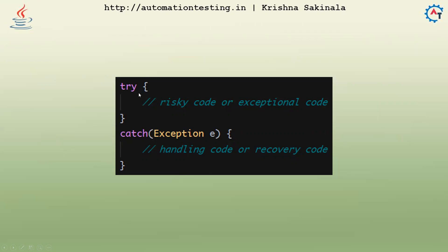In the try block you will write risky code or exceptional code — wherever you feel an exception might occur, you place that code inside the try block. In the catch block you write handling code or recovery code. If something goes wrong inside the try block, execution jumps directly into the catch block and executes the alternate recovery code, giving you smooth execution.